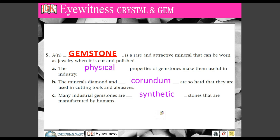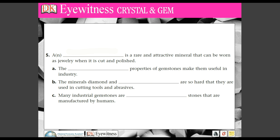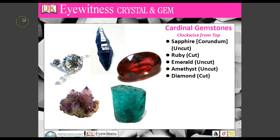We can also use synthetically created stones to create jewelry. Here are the cardinal gemstones. Sapphire is corundum — you see it uncut at the top. Going clockwise, there's ruby, which has been cut so you can see all the nice angles where it shines. Below that is an uncut emerald with that bluish green color. There's amethyst, the purple, uncut. And rounding it out at the top is a cut diamond.